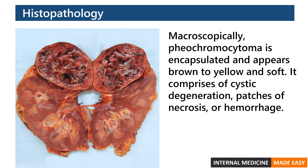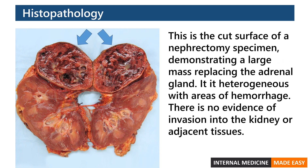Macroscopically, pheochromocytoma is encapsulated and appears brown to yellow and soft. It comprises cystic degeneration, patches of necrosis, or hemorrhage. The cut surface of a nephrectomy specimen demonstrates a large mass replacing the adrenal gland — it is heterogeneous with areas of hemorrhage, and there is no evidence of invasion into the kidney or adjacent tissues.